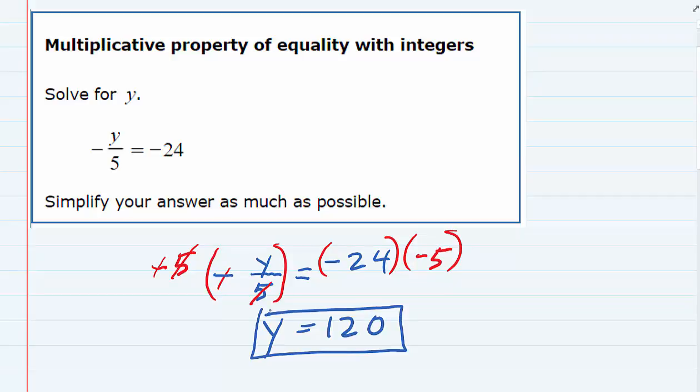So we were able to take care of the 5 being divided and the sign change in one step by using the negative 5 as my multiplier on both sides of the equation.